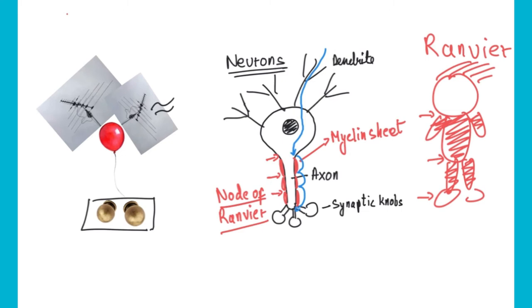That is one of the functions of the node of Ranvier. Now why myelin sheath is important is that it protects the cell body, the neurons, and also it provides nourishment for the neurons. Those are the functions for the myelin sheath.